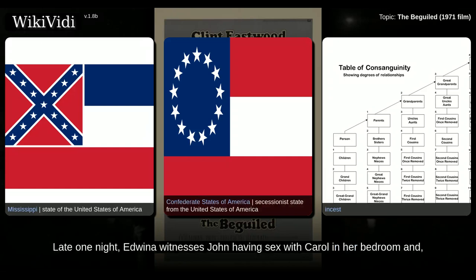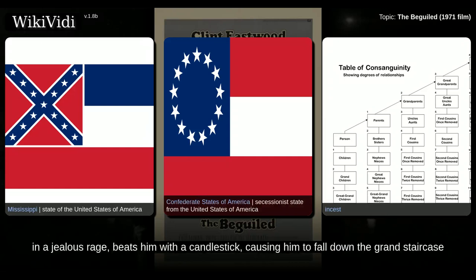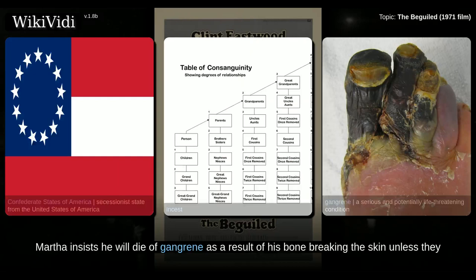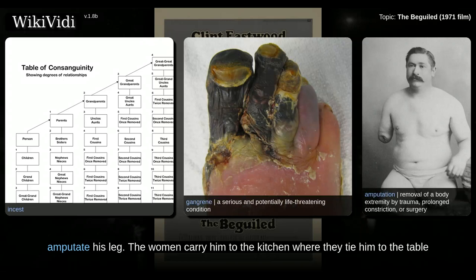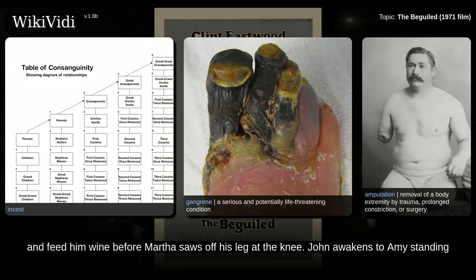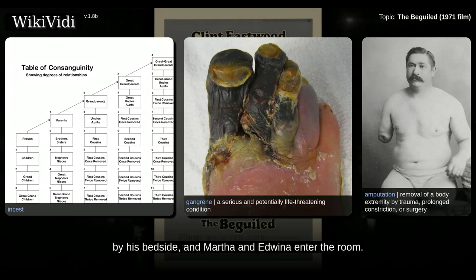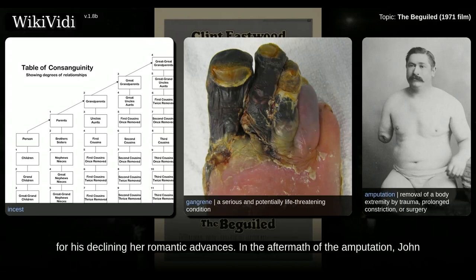Late one night, Edwina witnesses John having sex with Carol in her bedroom and, in a jealous rage, beats him with a candlestick, causing him to fall down the grand staircase and break his leg. Martha insists he will die of gangrene as a result of his bone breaking the skin unless they amputate his leg. The women carry him to the kitchen where they tie him to the table and feed him wine before Martha saws off his leg at the knee. John awakens to Amy standing by his bedside, and Martha and Edwina enter the room. When they reveal that his leg has been amputated, he goes into a fury, convinced that Martha went through with the amputation in retaliation for his declining her romantic advances.